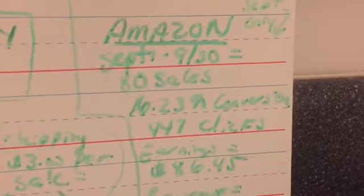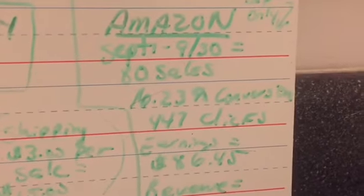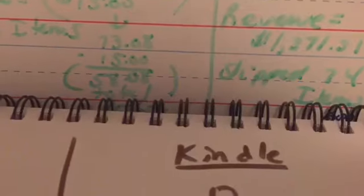With Amazon, I had 80 sales, 16.23% conversion, 447 clicks. My earnings was $86.45. The revenue, of course, I only get like 4% off of the revenue, which is $1,371.31. I shipped 74 items.